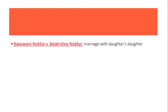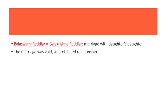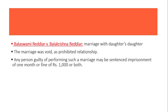In the case of Bala Swami Reddyar versus Bala Krishna Reddyar, one person married his daughter's daughter. This type of marriage is totally void because daughter's daughter is a prohibited degree of relationship as per Section 3. Any person found guilty of marrying within sapinda relationship or prohibited degree of relationship: first, the marriage is totally void; and second, the punishment is one month imprisonment and/or a fine of Rs. 1000 or both.